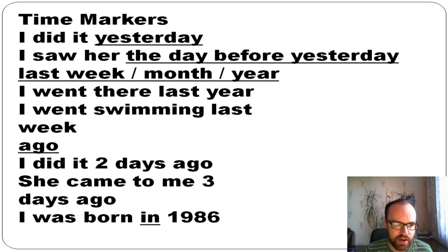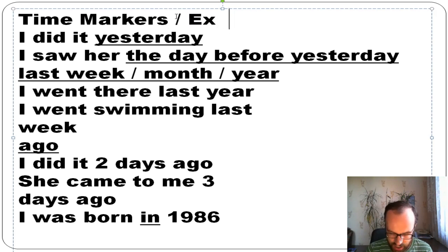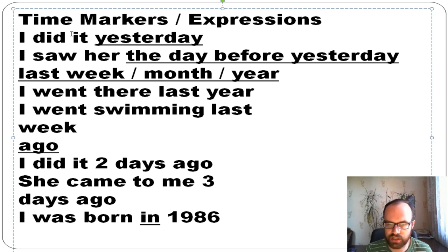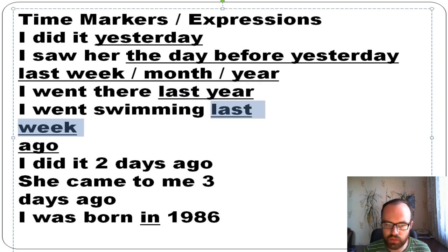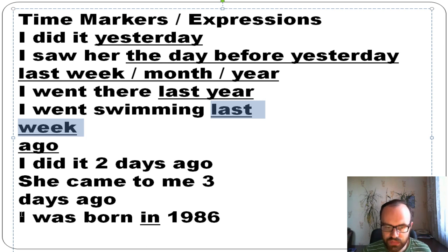You also need to know time markers for past simple. We use it with: yesterday ('I saw her yesterday'), the day before yesterday, and phrases with 'last' — last week, last month, last year ('I went there last year'). Also phrases with 'ago' — 'I did it two days ago,' 'she came three days ago.'